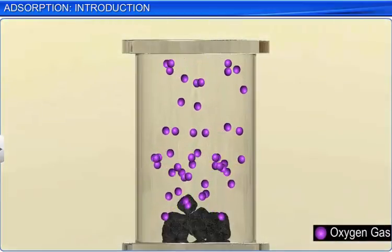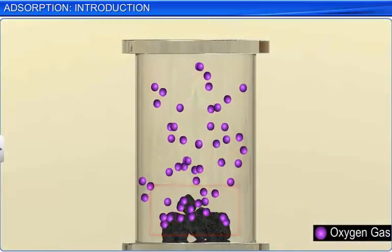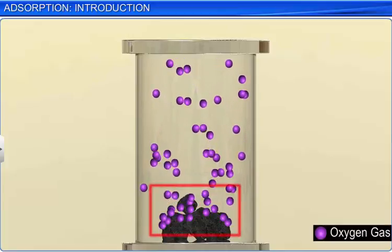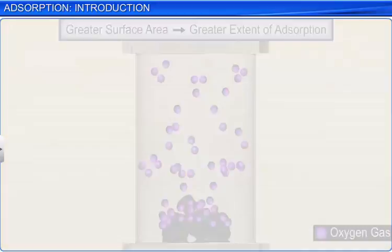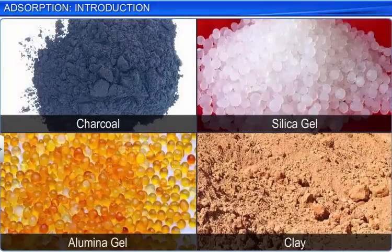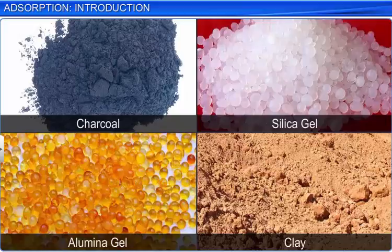It is important to note that adsorption is a surface phenomenon. Hence, greater the surface area of the adsorbent, greater is the extent of adsorption. Thus, finely divided metals and substances with porous structure are good adsorbents as they provide large surface area.